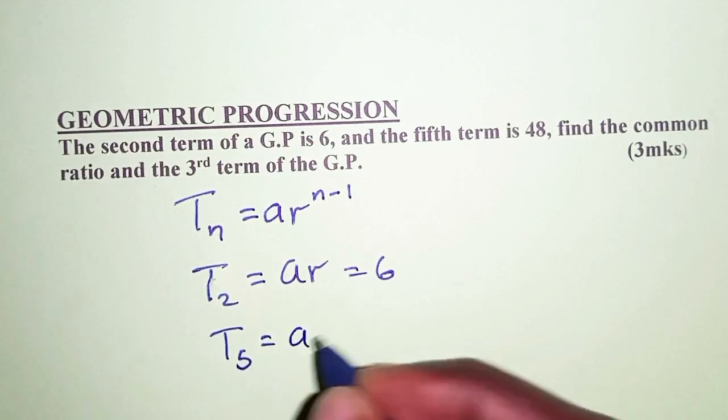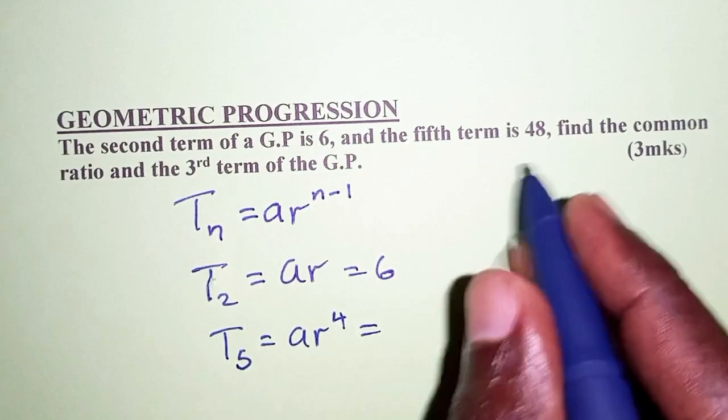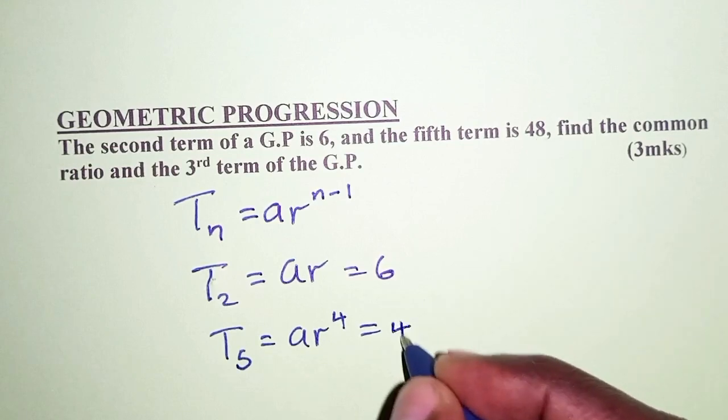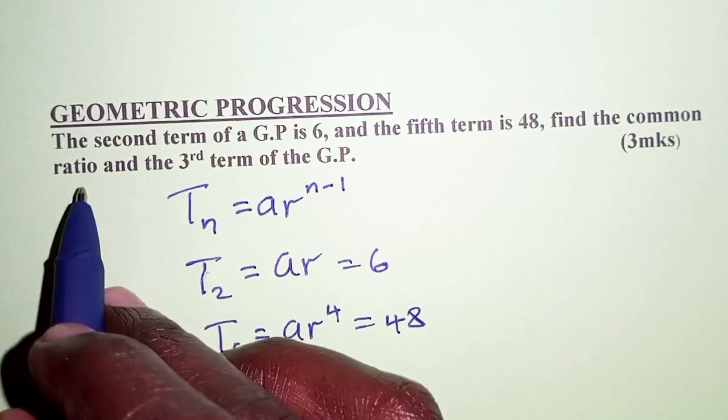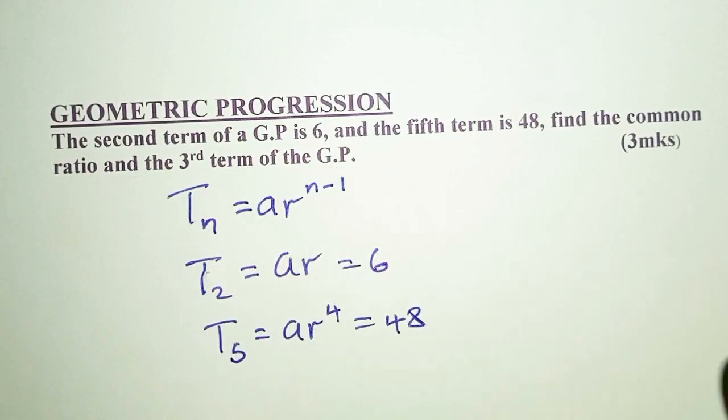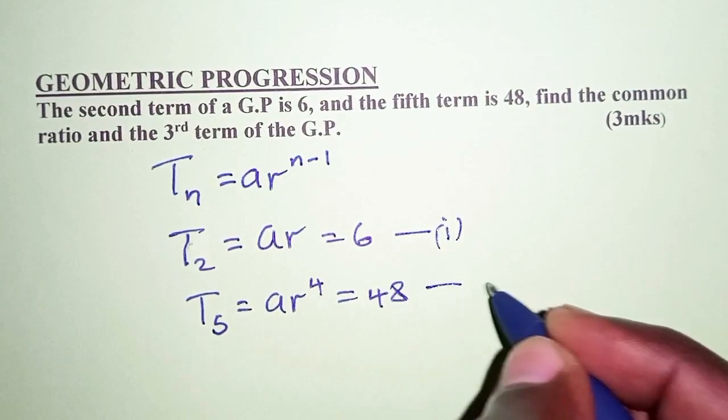So for the fifth term, n is 5, so we have a times r raised to 5 minus 1, and that is 4, which we're told is 48. So we're told to find the common ratio and the third term of the GP.